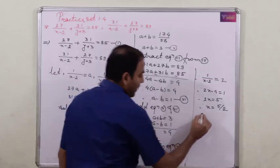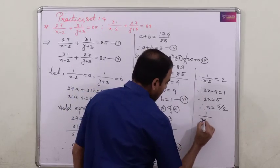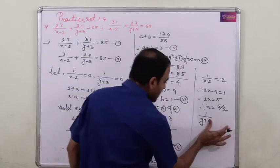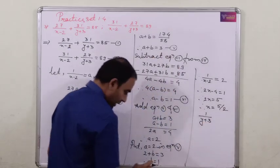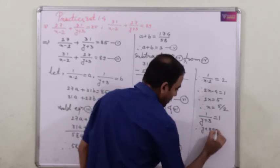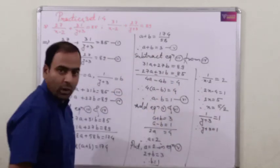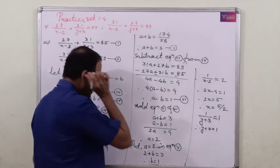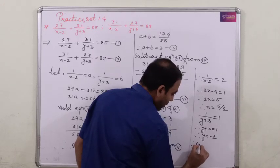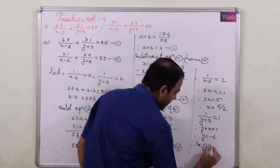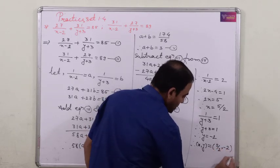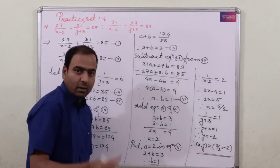By cross multiplication, 2x minus 4 equals 1, so 2x equals 5, therefore x equals 5 by 2. And 1 upon (y plus 3) equals b, which is 1, so y plus 3 equals 1, therefore y equals minus 2. The solution of the given equation is (5/2, −2).